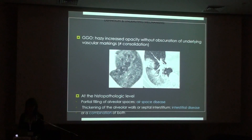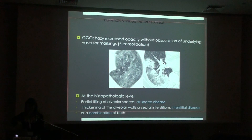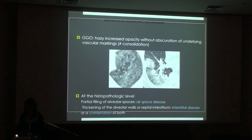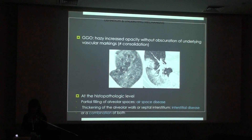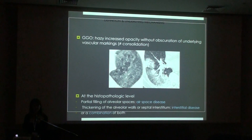Ground glass is a hazy increase of opacity without obscuration of the underlying vascular markings, and this is the main difference with consolidation. You can still see the vessels through ground glass, whereas with consolidation, we can only see the bronchi containing air. At the histopathologic level, ground glass may be due to a partial filling of the alveolar spaces — airspace disease — but also to thickening of the alveolar walls or septal thickening, in which case it is due to interstitial disease. Sometimes it's a combination of both mechanisms.